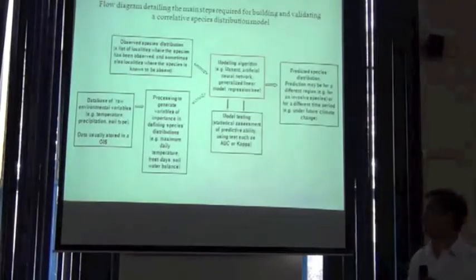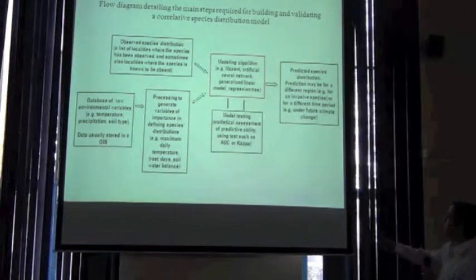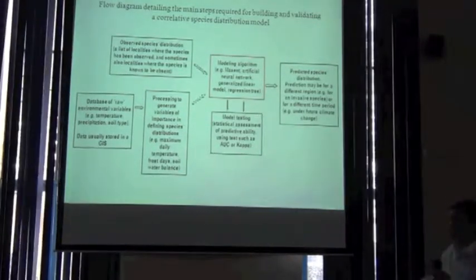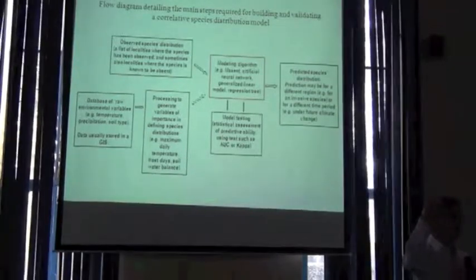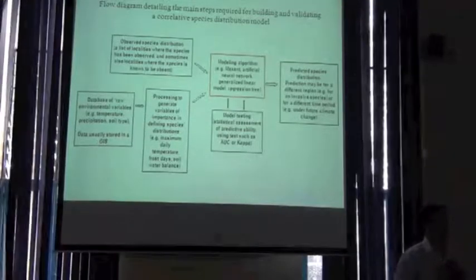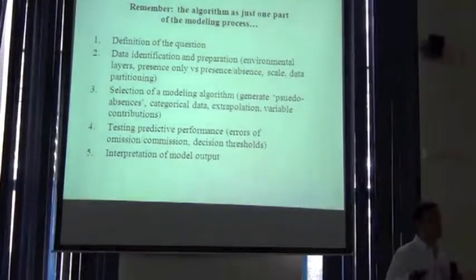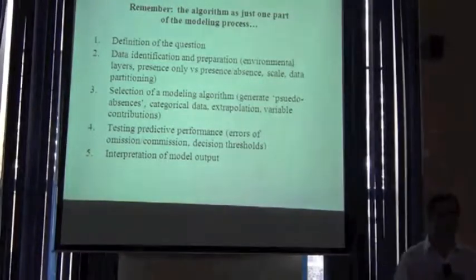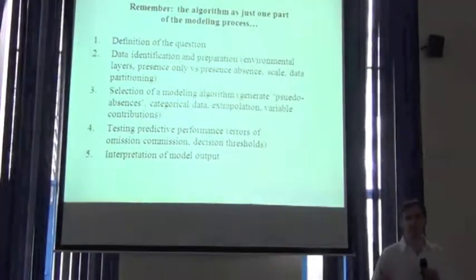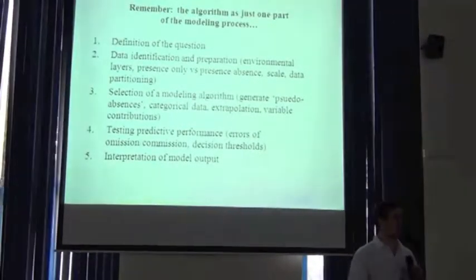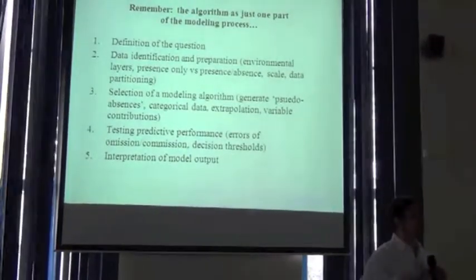What are some of these considerations that you should be thinking of? We're at this point in the process. Remember, yesterday we talked about the species occurrence records, we talked about environmental data. We're now really going to focus on the nitty-gritty of what's the actual algorithm that we're going to use — to build this association, this correlation, between the presence records or the presence and absence records and the environmental data. But I want to emphasize that the actual algorithm you use is just one part of a much broader modeling process.